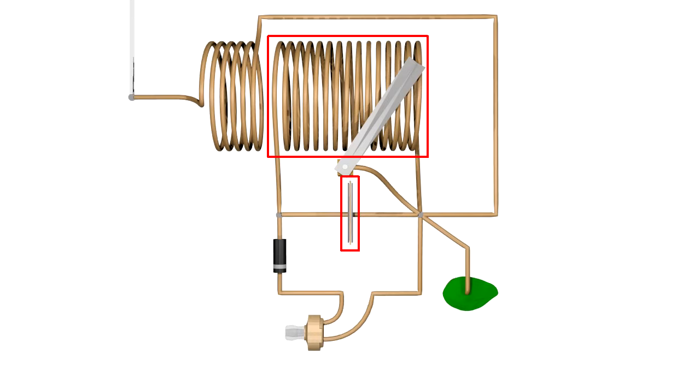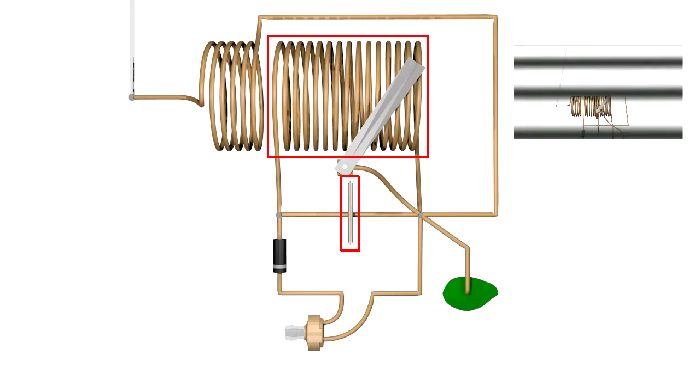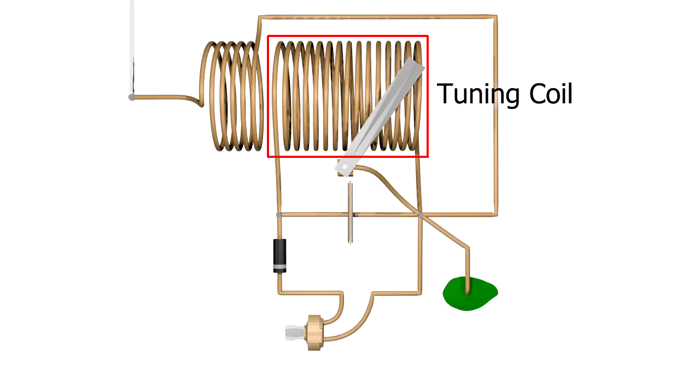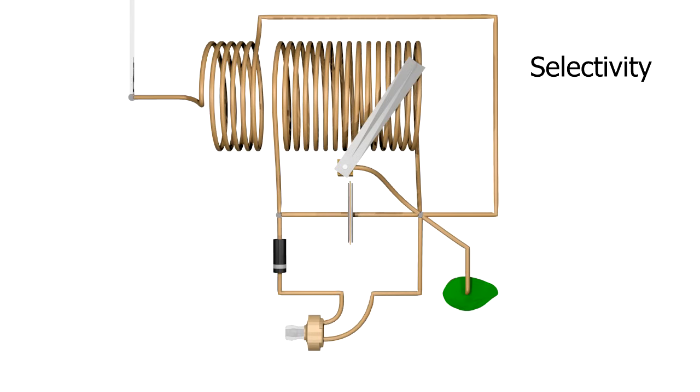That's where the second coil and capacitor come in. They allow us to tune into, or select, just the radio station we want. Its waves will influence the electrons in this part of the circuit. All other frequencies will influence electrons in this alternate path, from the first coil directly to earth ground. We'll call the second coil the tuning coil, and the capacitor the tuning capacitor. Since we use them to select the frequency, we say they affect the selectivity.